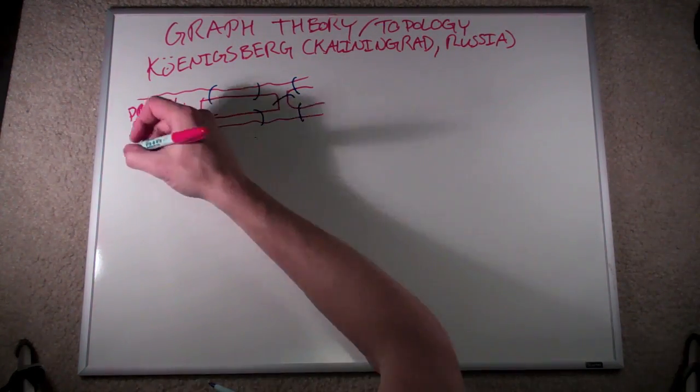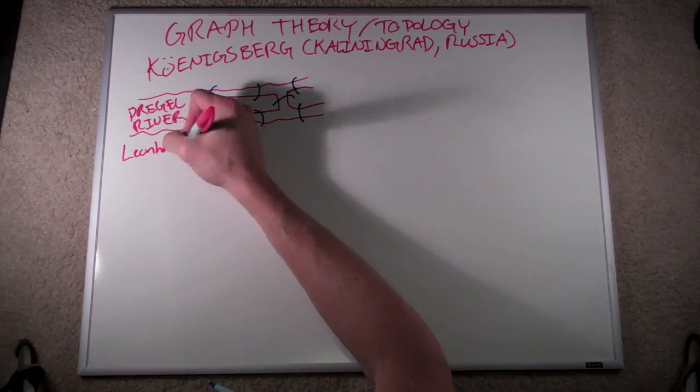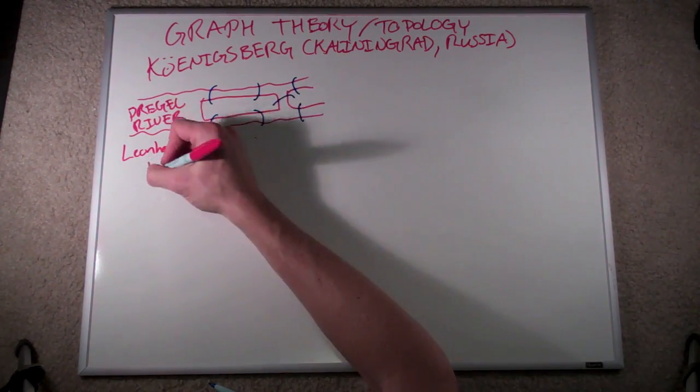Thirty years before the American Revolution, along comes a mathematician by the name of Leonard Euler, who proved that it wasn't possible. This is how he did it.